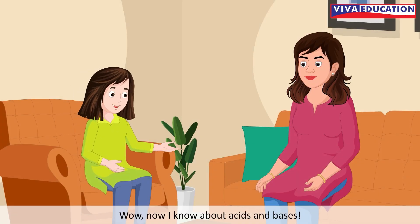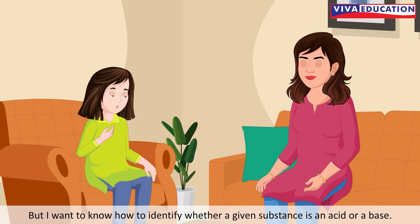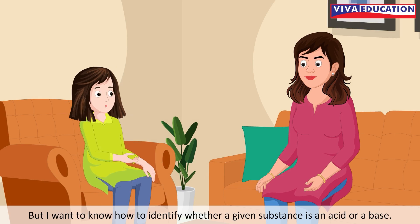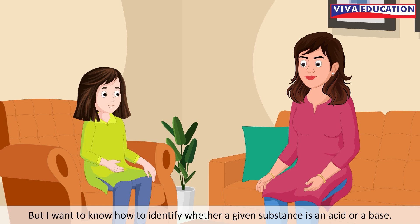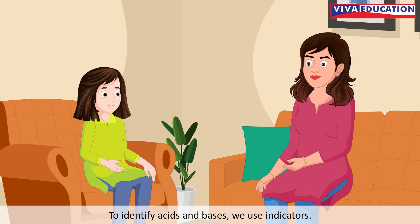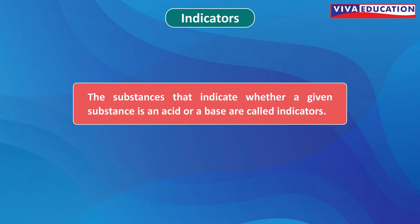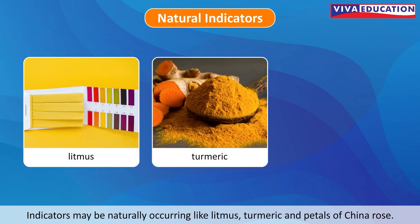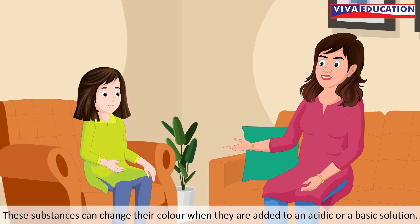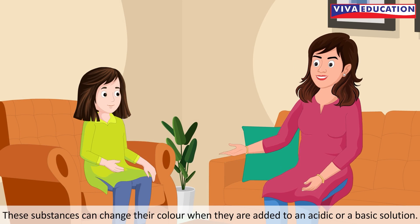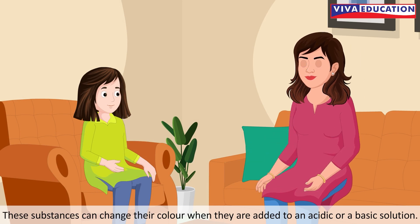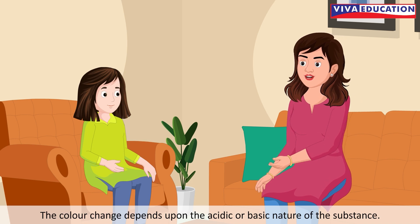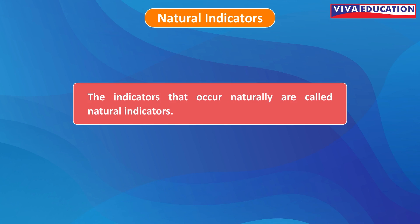Now I know about acids and bases. But I want to know how to identify whether a given substance is an acid or a base. To identify acids and bases, we use indicators. The substances that indicate whether a given substance is an acid or a base are called indicators. Indicators may be naturally occurring like litmus, turmeric, and petals of china rose. These substances can change their color when added to an acidic or a basic solution. The color change depends upon the acidic or basic nature of the substance. Indicators that occur naturally are called natural indicators.